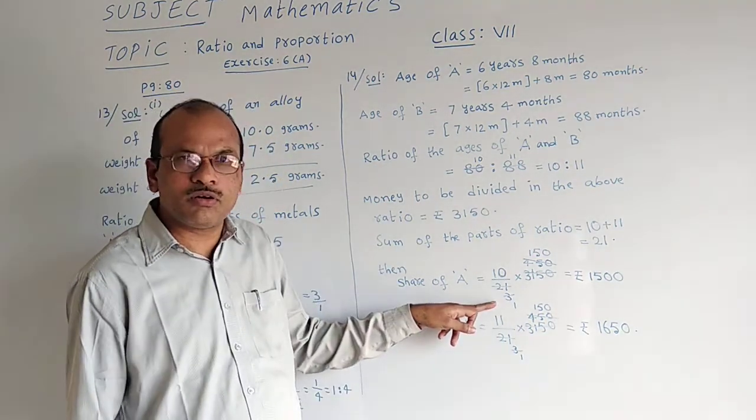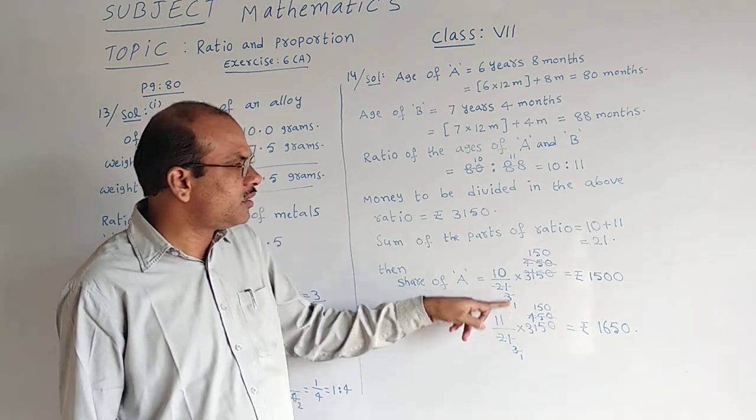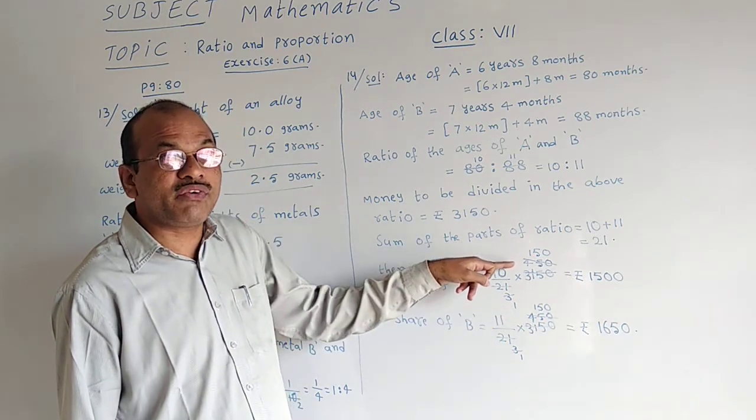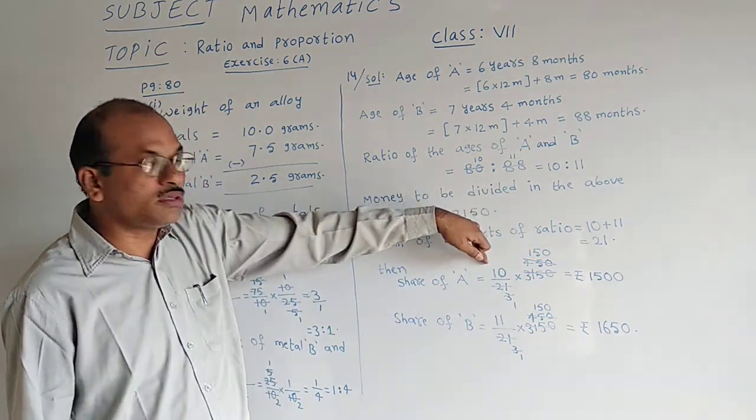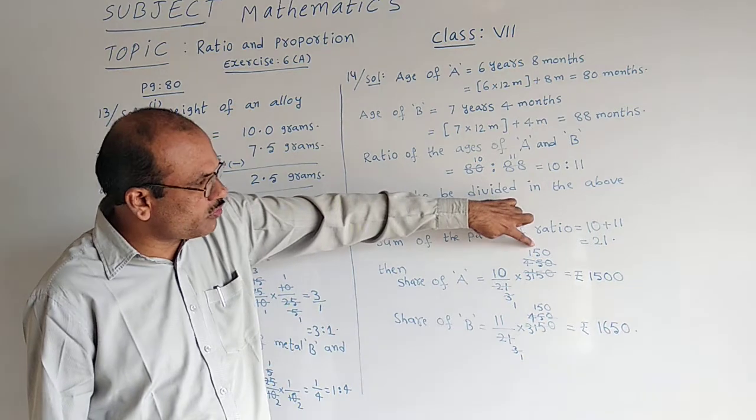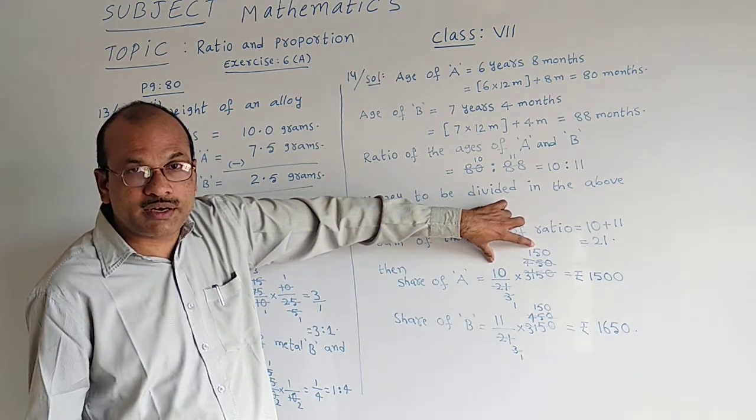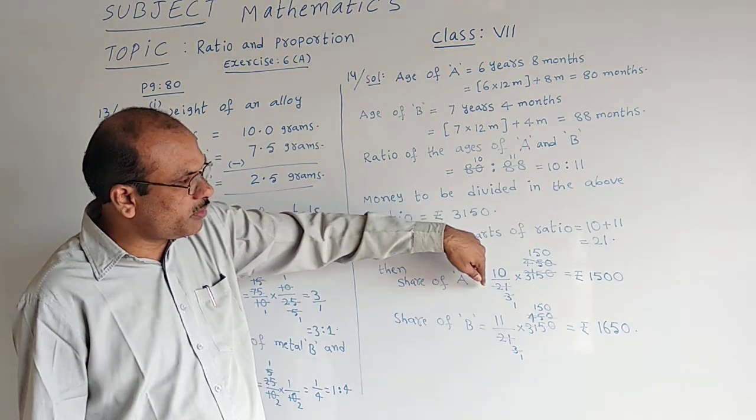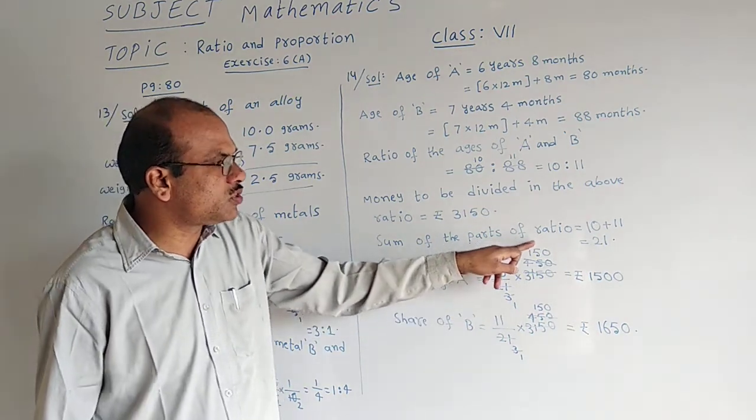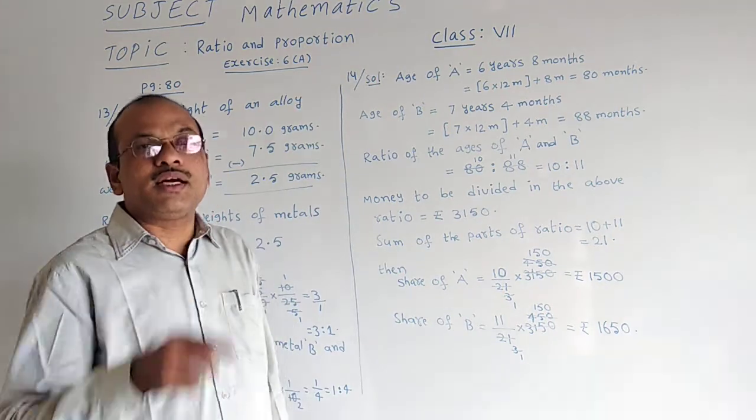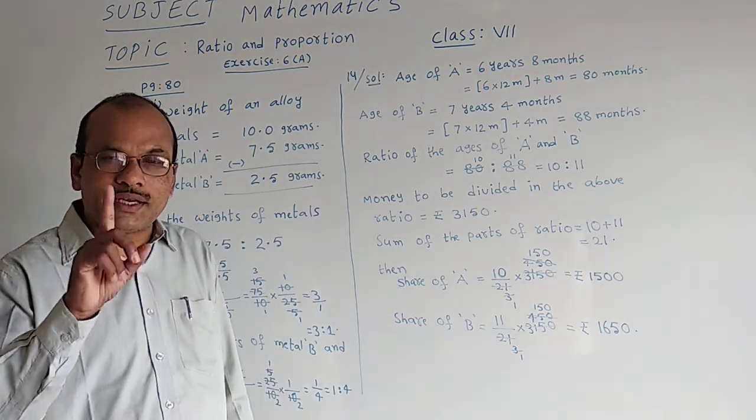Afterwards we have been to 3 table. 3 once 3, 3 fifteens is 45, and 0. Only 150 we have got. Here 10 is left. Both values are numerators only. We cannot cancel them. Denominator only 1 is left. So 10 into 150 gives you 1,500 rupees. That is the share of the first person A.